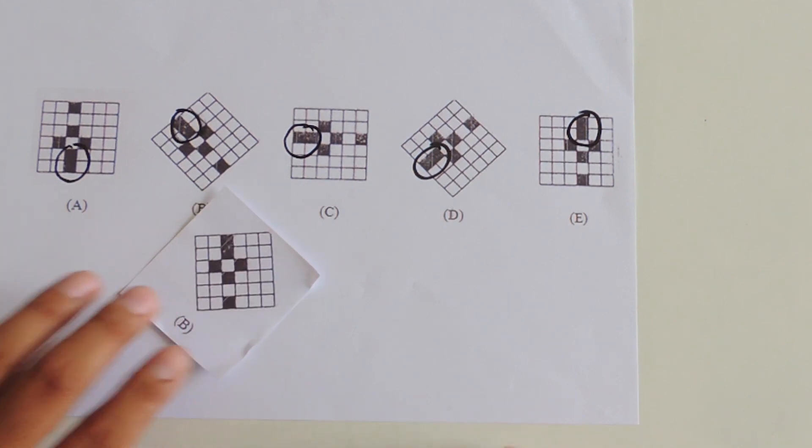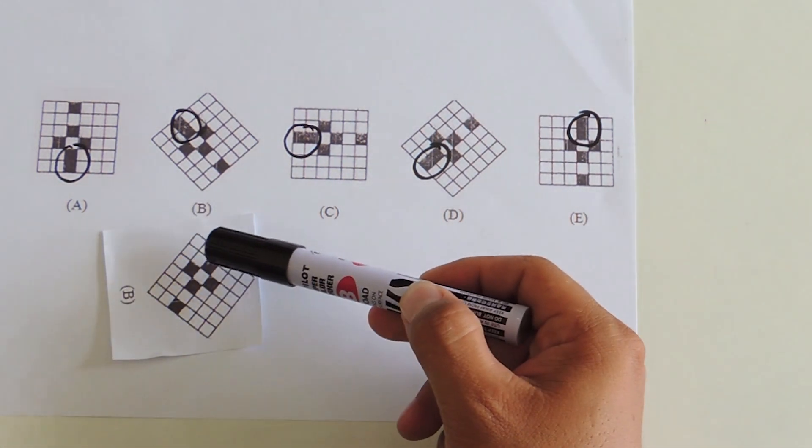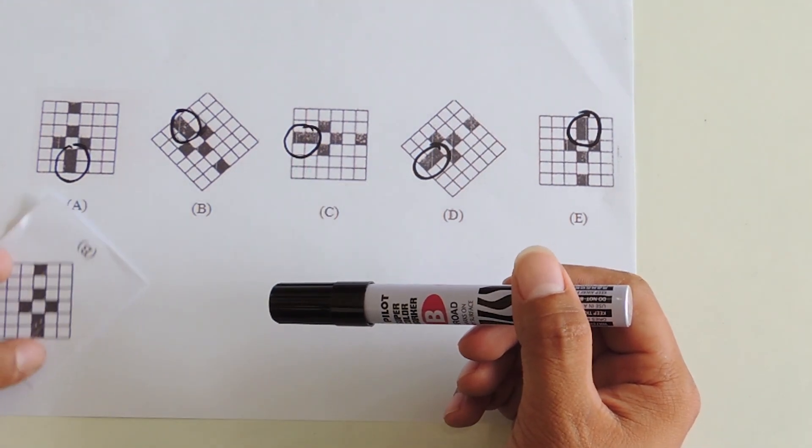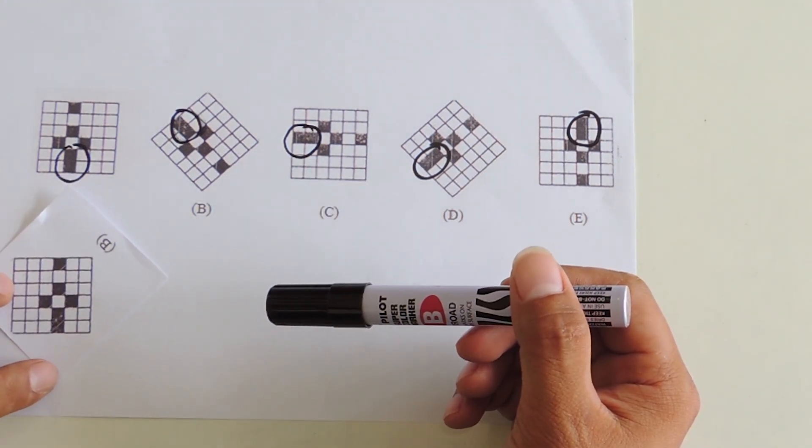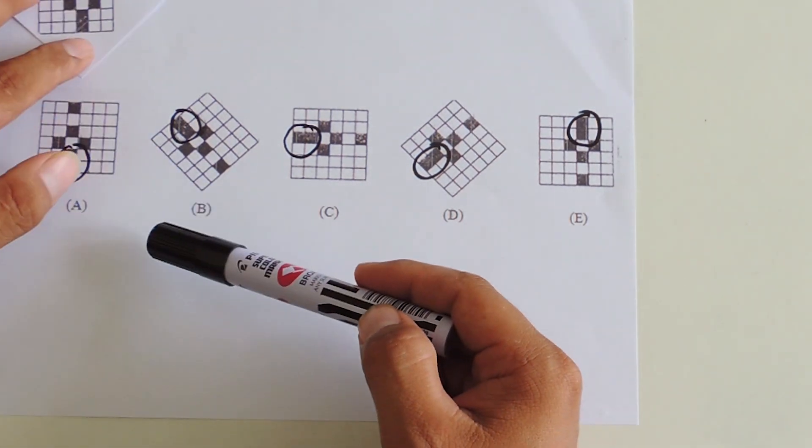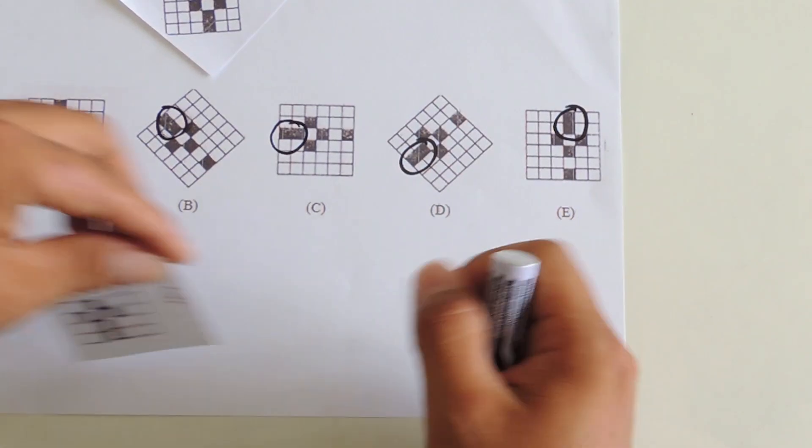If we position option B's two shaded squares at the bottom, we will have a different figure from A. So that's letter B. Then option C...